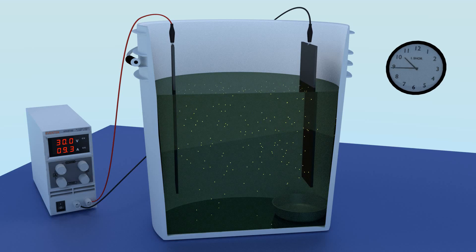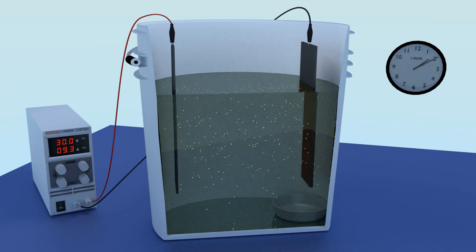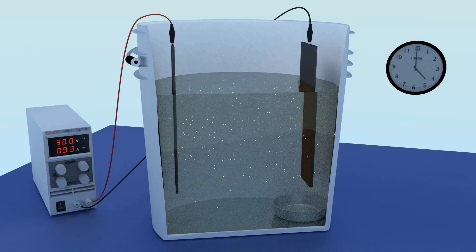The higher the amps, the faster it will work. A larger anode and cathode will significantly increase the amps.